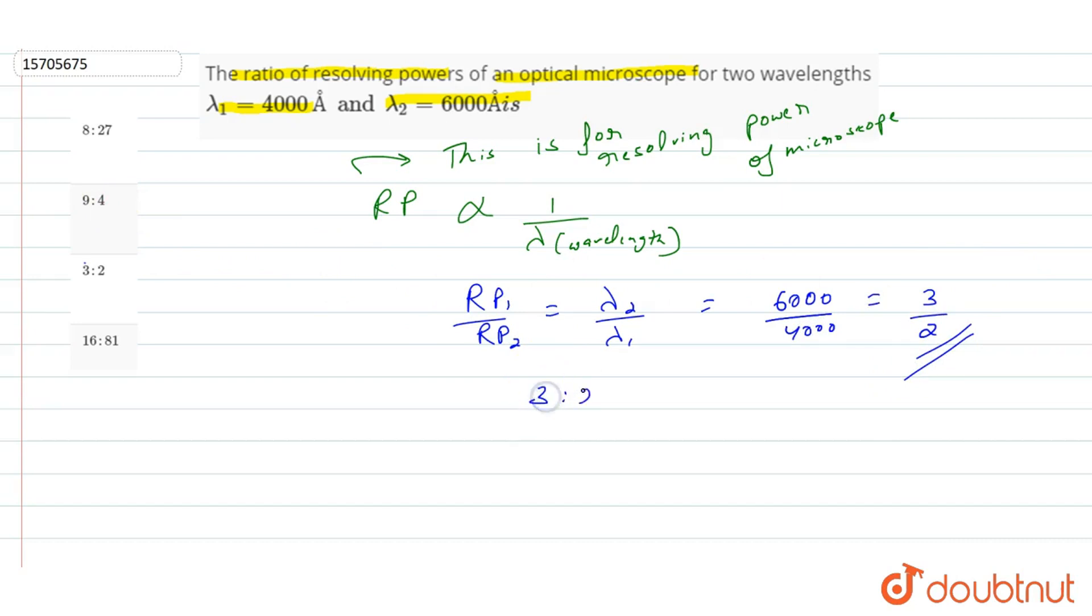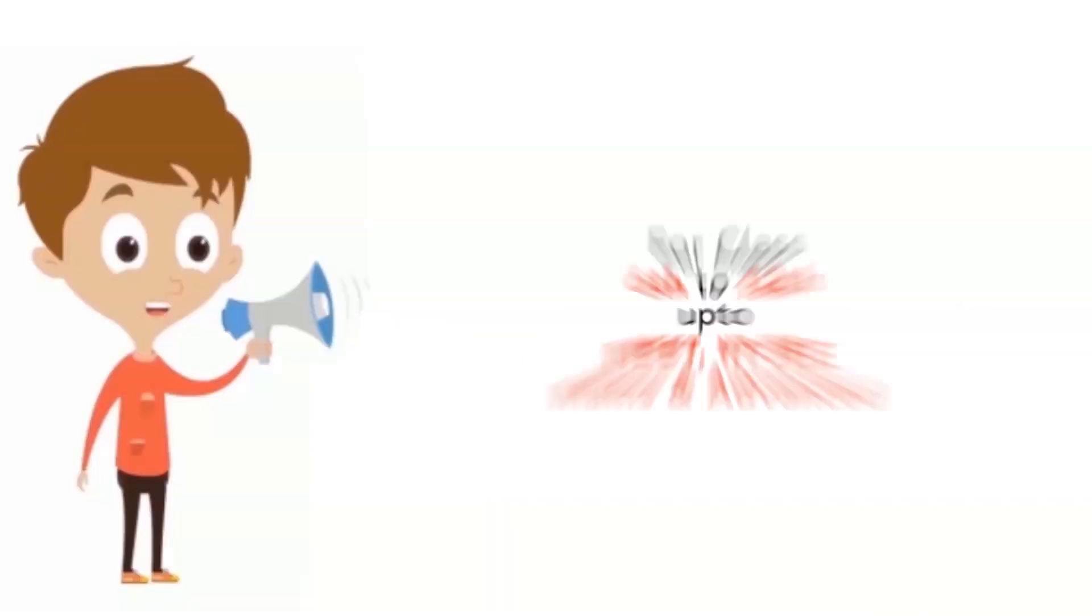So ratio 3 is to 2. This is our solution. Option C is the correct answer of this question.